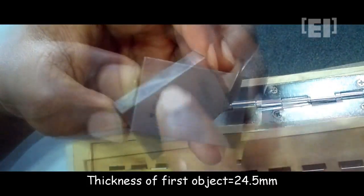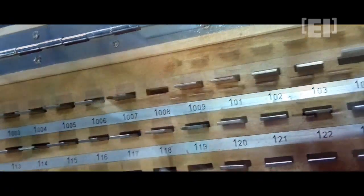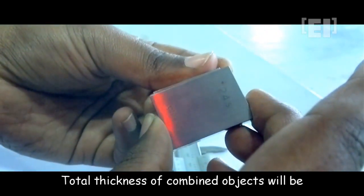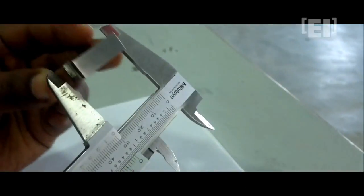We are taking a slip gauge of thickness 24.5 mm. Taking another slip gauge of thickness 1.38 mm. Putting both in between the gap in the lower jaws.